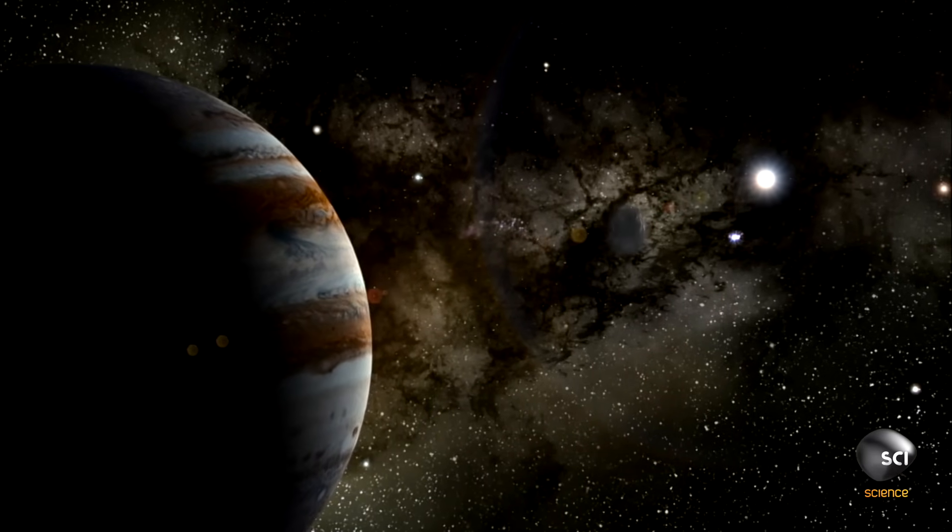These comets can be many miles across and they're moving extremely rapidly, sometimes as much as a hundred miles per second. This makes them pretty dangerous. How dangerous? Ask a dinosaur.